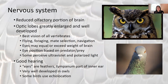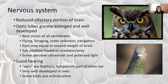Even though an owl has eyes in the front for binocular vision, owls have a special adaptation: they can move their head almost 180 degrees in both directions, giving them almost 360-degree vision. Something like a pigeon has eyes on the side, giving them about 300 degrees of vision without even moving their head.